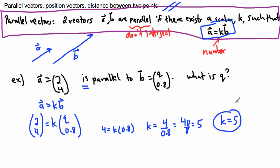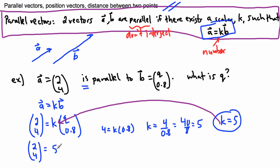K equals 5 helps me get the answer, but I need to substitute it back in. That means (2, 4) equals 5 times (Q, 0.8). Now I can find Q by writing the equation for the x-component: 2 equals 5 times Q, so 2 equals 5Q. Solving for Q, I divide both sides by 5: Q equals 2 over 5.